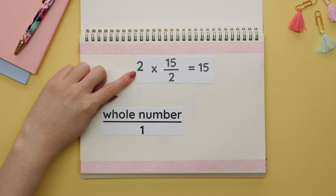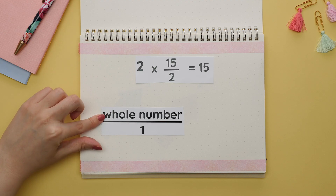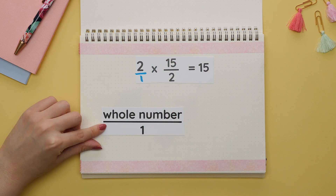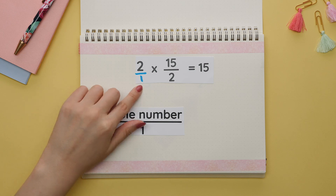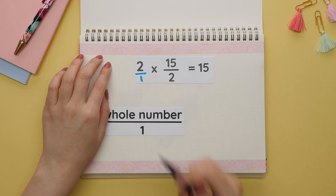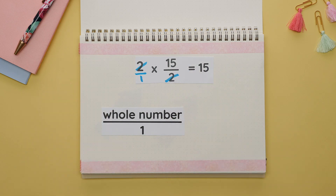When multiplying a whole number with a fraction, we can turn the whole number into a fraction by placing a one as the denominator. We can do this with any whole number. In this example, the twos are across from each other so we cancel them out to get 15. This type of example is commonly seen in balancing chemical equations.